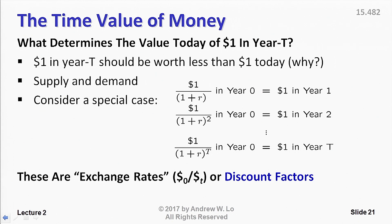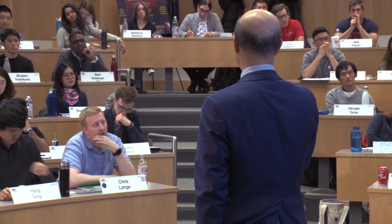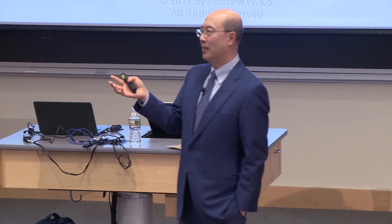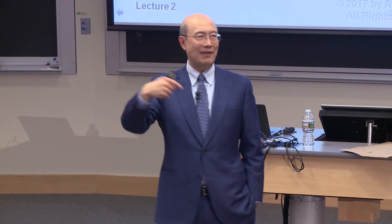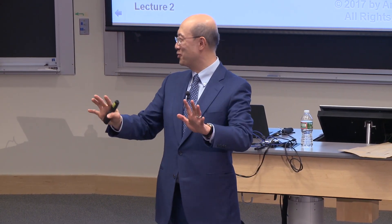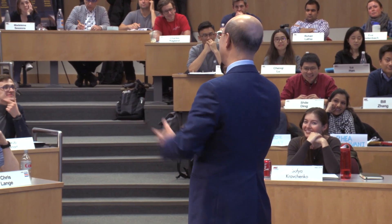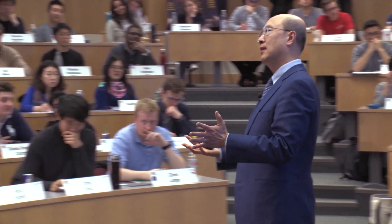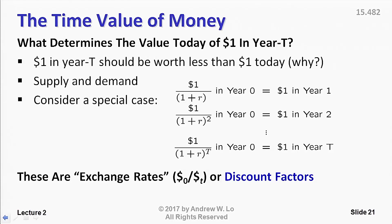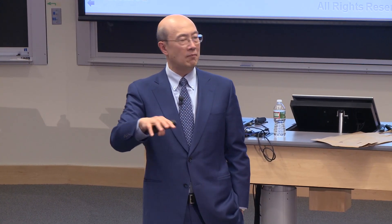That assumption is tantamount to saying that most people prefer more money now to later — you would prefer $1 today to $1 next year. If anybody violates that assumption, please see me after class — I'll be happy to help you out and make you much better off. So R is non-negative. Under the assumption that the discount rate doesn't change over time, if I have $1 two years from now and bring it back to today, it's 1 over (1+R)^2, and similarly R cubed, R to the fourth, and so on. That's a simplification that'll make our calculations much easier.